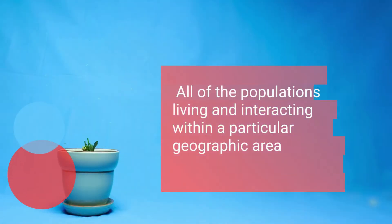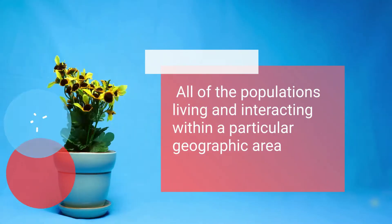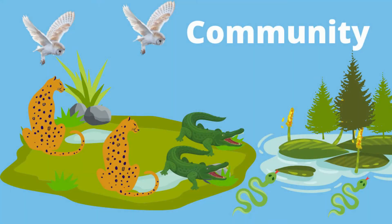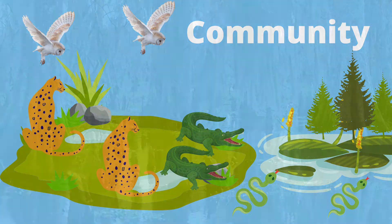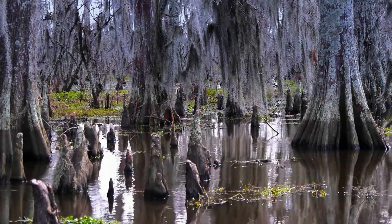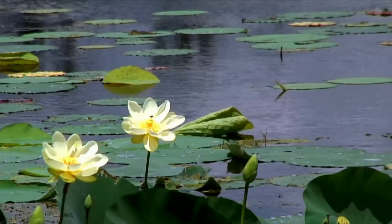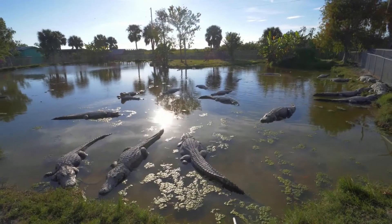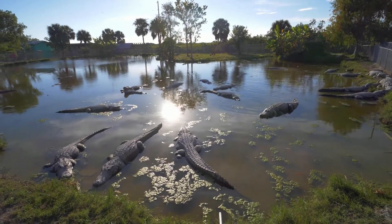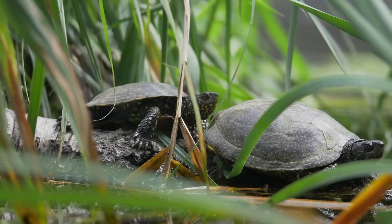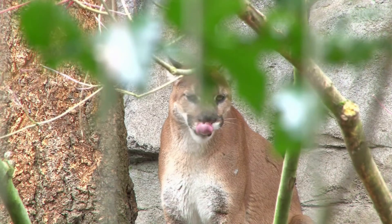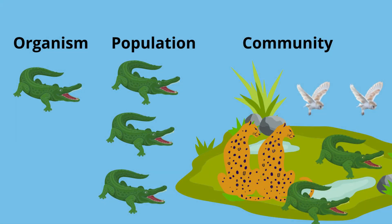A biological community is all the populations living and interacting within a particular geographic area. This would include all the different plant and animal species found within the Okefenokee Swamp. In fact, the community of the Okefenokee Swamp includes 621 species of plants, 39 fish species, 37 amphibian, 64 reptile, 234 bird, and 50 mammal species. Wow, that's a lot of diversity and a large community.